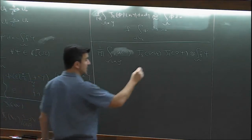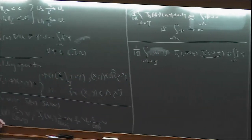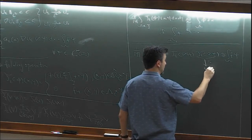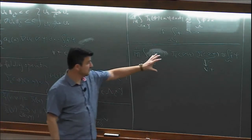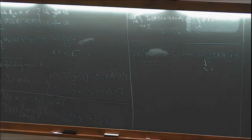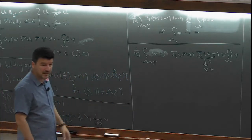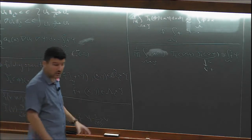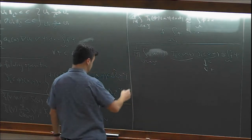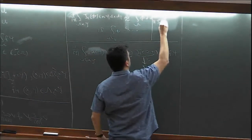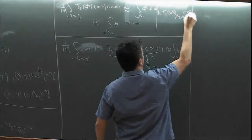Passing to the limit: the test function ψ is smooth and we have strong convergence, so this term converges. The question is what happens to the other term. We also discussed that when the unfolding weakly converges to a limit, the sequence converges to the average of the limit. At this point the main question is: what happens with T_ε(∇u_ε)?